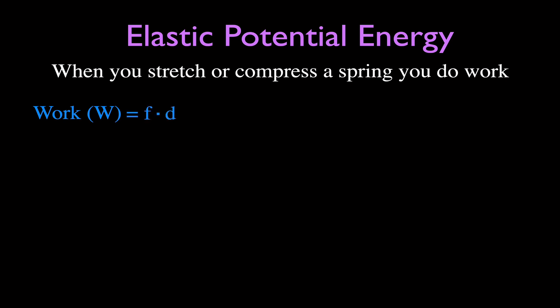The work is simply the force that you apply times the distance through which that force is applied. When you do work on a spring, you give that spring potential energy. The amount of work you do equals the potential energy stored in the spring. Therefore, we can calculate the potential energy as F times D, which is K times X — the spring constant times X, the change in length of the spring. That's how we calculate the force needed to stretch a spring.